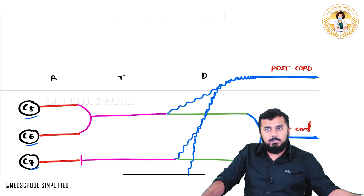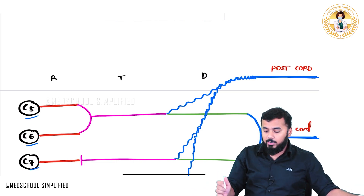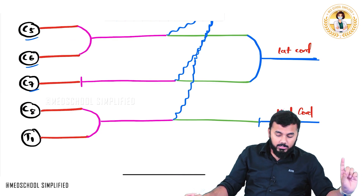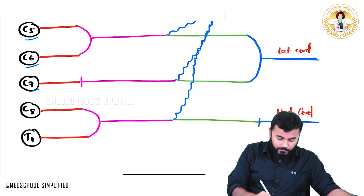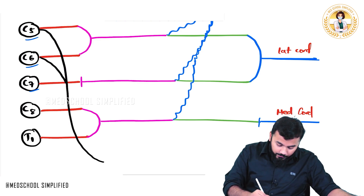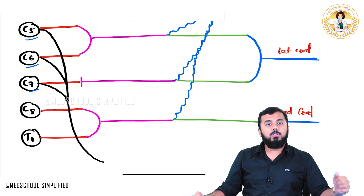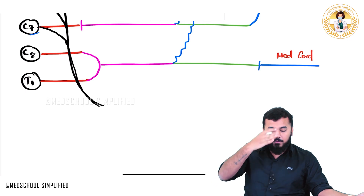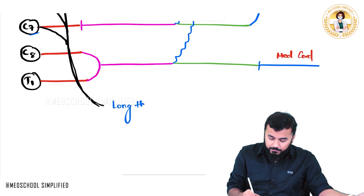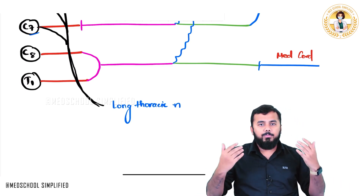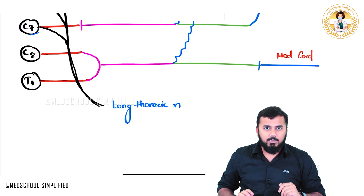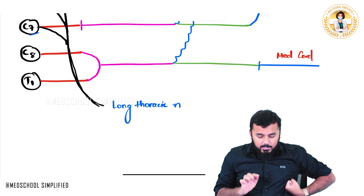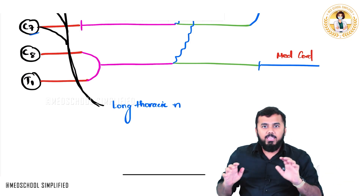This is how you draw a brachial plexus. Now, from the roots of C5, C6, and C7, a very long nerve is formed — this is called the long thoracic nerve. The long thoracic nerve supplies the serratus anterior muscle. If someone gives a hard blow to the lateral side of your chest, such as in kickboxing, this nerve will be damaged and the patient will have winging of scapula.